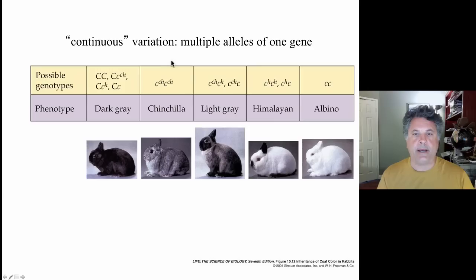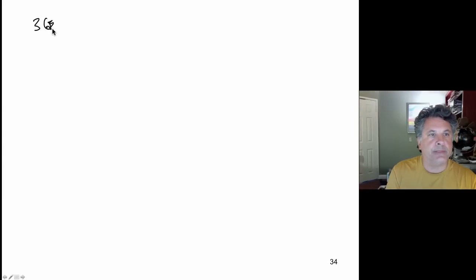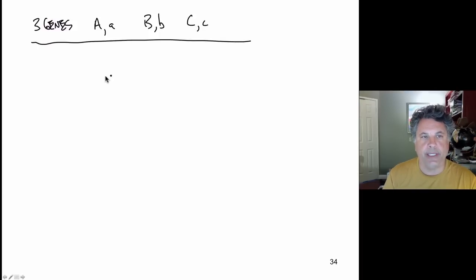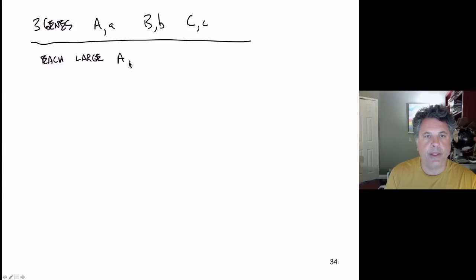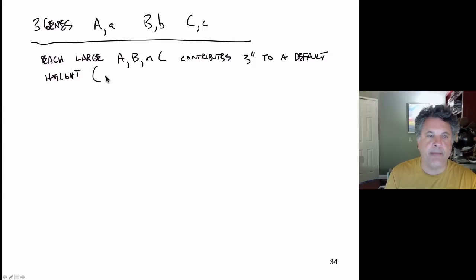To illustrate this, let's consider a simple model. We have three genes with alleles big A, little a, big B, little b, and big C, little c. In this model of polygenic inheritance of quantitative alleles, each large allele — A, B, or C — contributes three inches to a default or base height. Let's make that base default height five feet zero inches in our model.